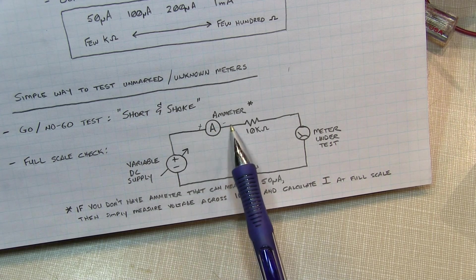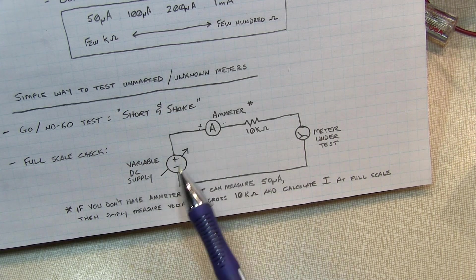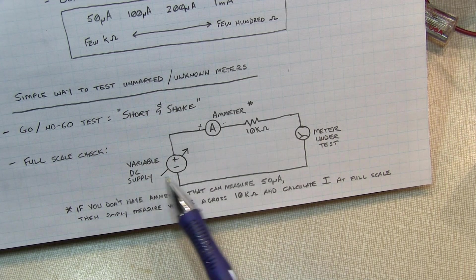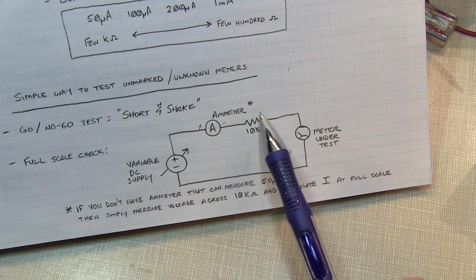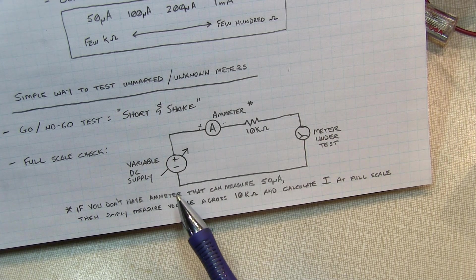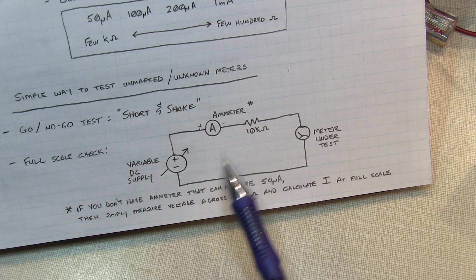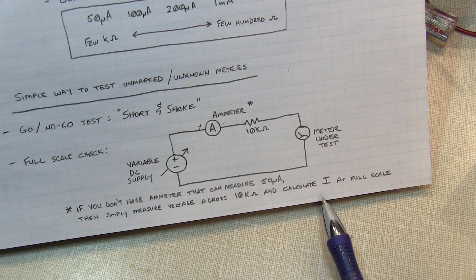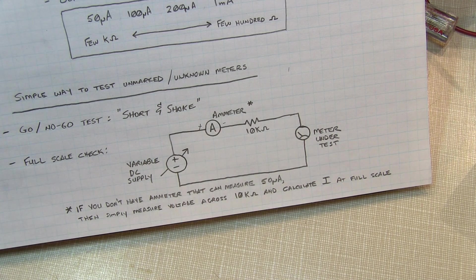Now if you don't have an ammeter or a DMM that can accurately read down to these lower current levels, another option is to not put the ammeter here at all, just essentially short that out. And then apply the DC power supply and adjust it up until you read full scale. And then measure the voltage across the 10K resistor. And then knowing the voltage across 10K, and you can measure the 10K resistor's value itself, Ohm's law makes it very easy to calculate what that full scale current is. So let's go take a look at testing a few of these meters.